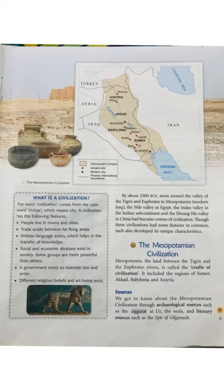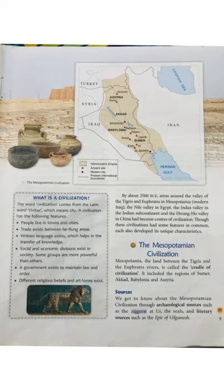Mesopotamia is the land between the Tigris and Euphrates rivers, and it is called the cradle of civilization. Why? Because it is believed that civilization emerged, grew, and began here — the complex urban civilization is believed to have emerged here. It included the regions of Sumer, Akkad, Babylonia, and Assyria.